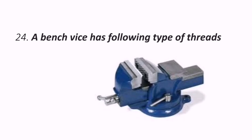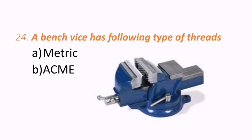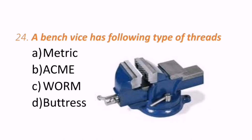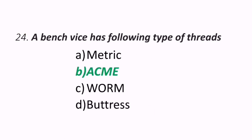Twenty-fourth question: a bench vice has which type of threads? Options are metric threads, ACME threads, worm threads, or buttress threads. The correct answer is bench vice has ACME threads. B is the correct answer.